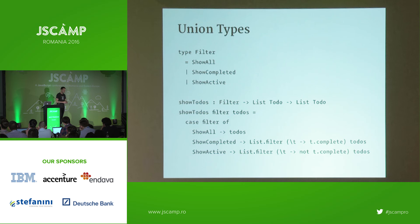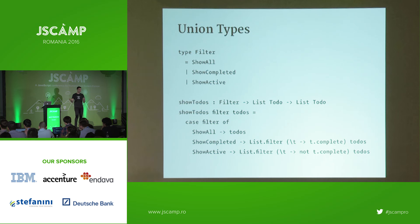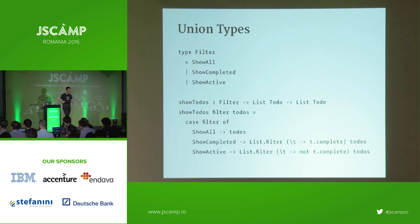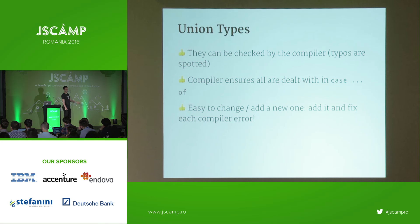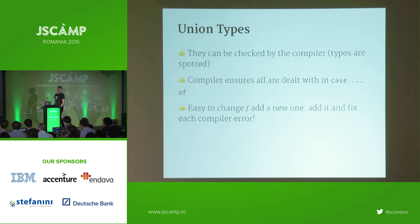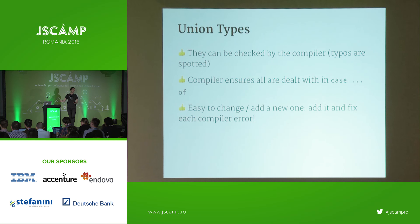Where the type system really shines is when you define your own types. The first is called a union type. We have 'type Filter' which can be ShowAll, ShowCompleted, or ShowActive. Then we write a 'showToDos' function taking a filter and a list of todos and returning a new list. We case-match on the filter: ShowAll returns every todo, ShowCompleted filters for complete ones, ShowActive filters for incomplete ones. The compiler checks the case is exhaustive — if you typo a type or miss one, it's got your back.